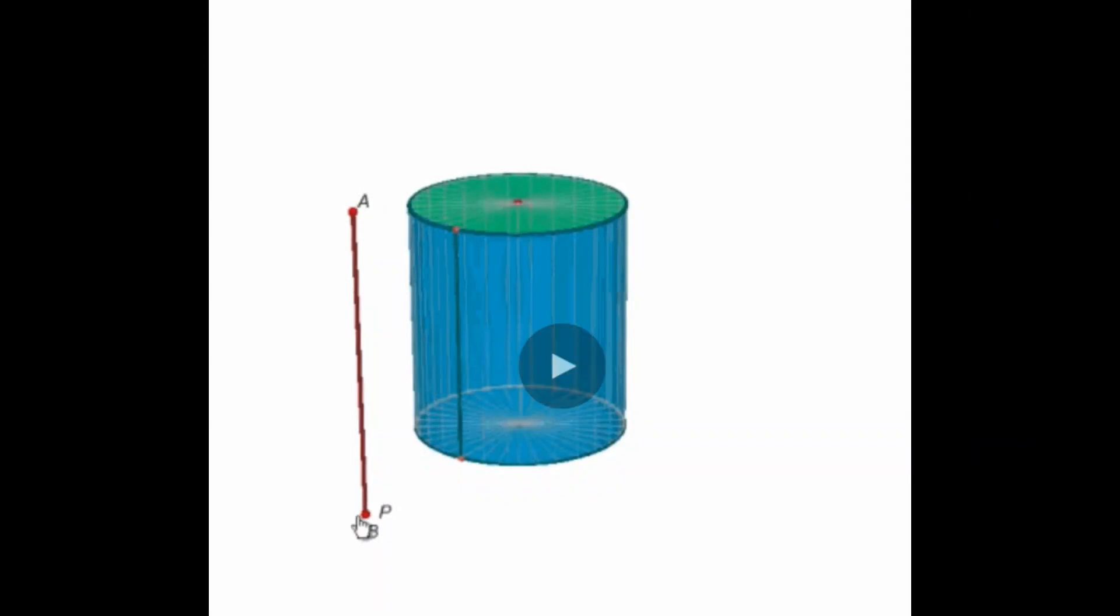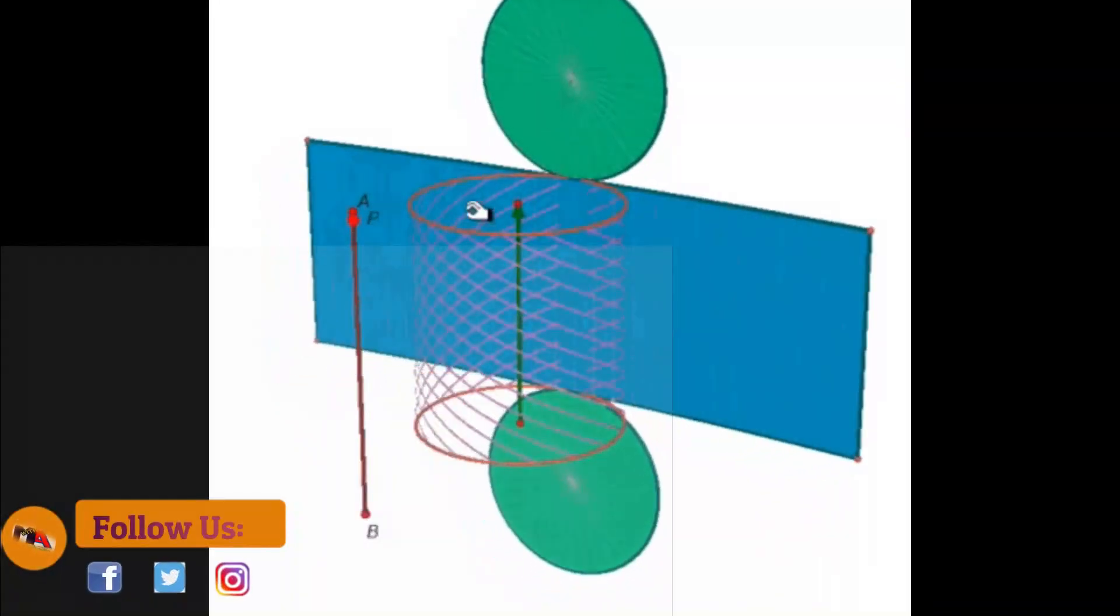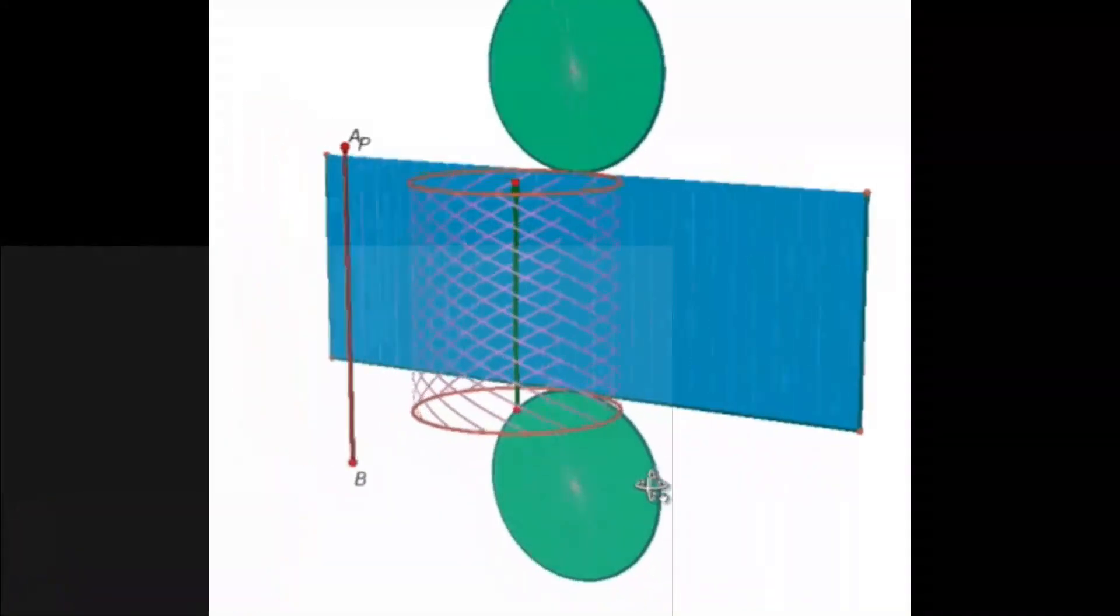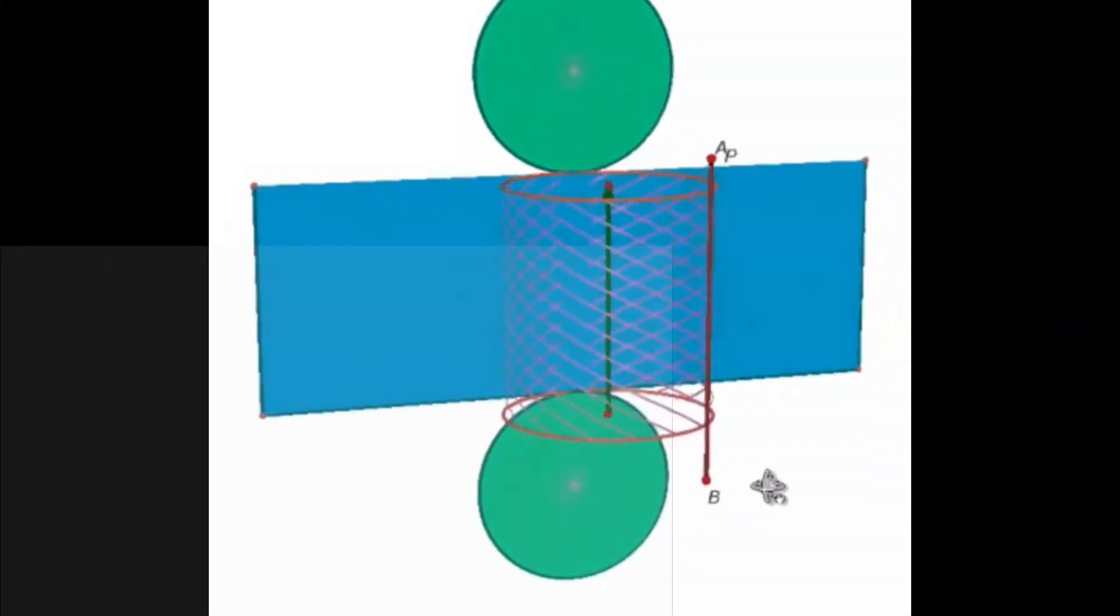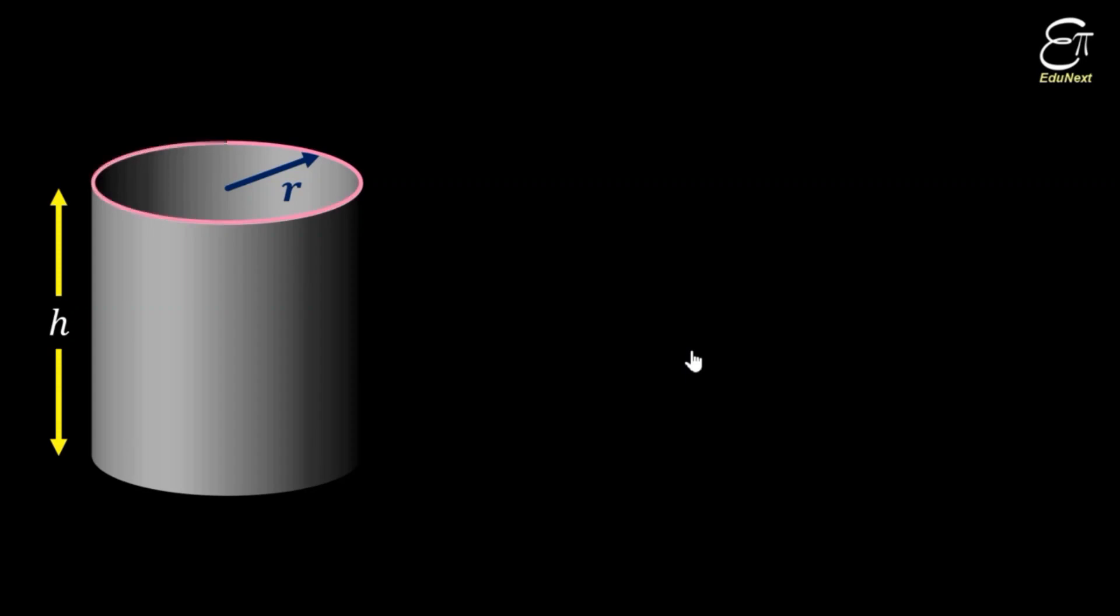In conclusion, the cylinder is a simple yet versatile shape with a wide range of applications in various fields. Its geometry is fundamental to the understanding of various physical and biological phenomena, and its properties make it an indispensable tool in engineering, mathematics, physics, and biology.